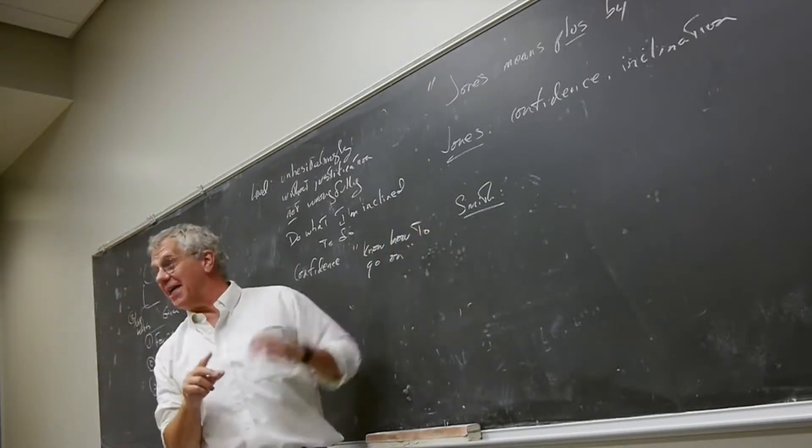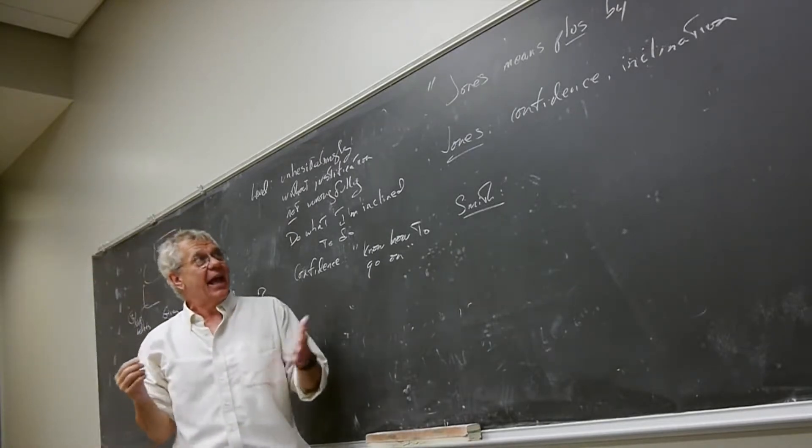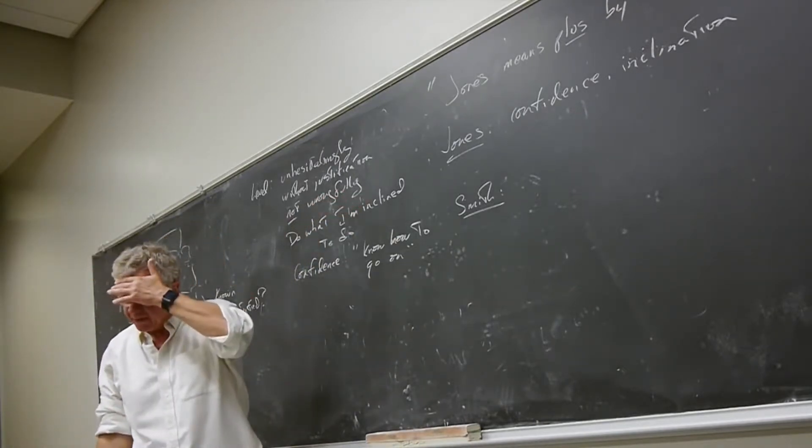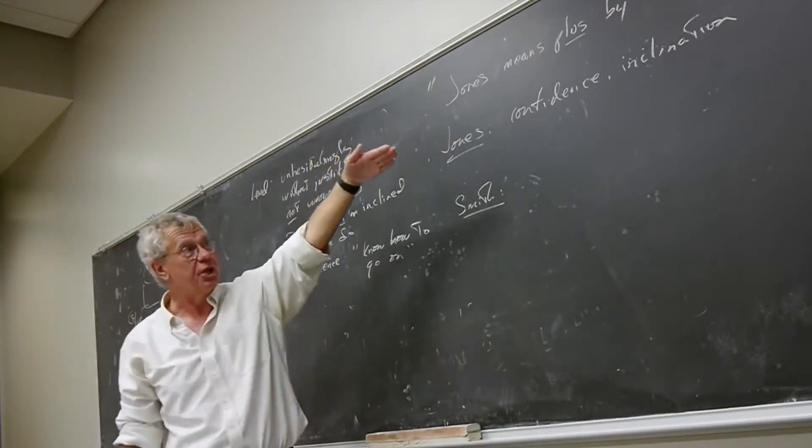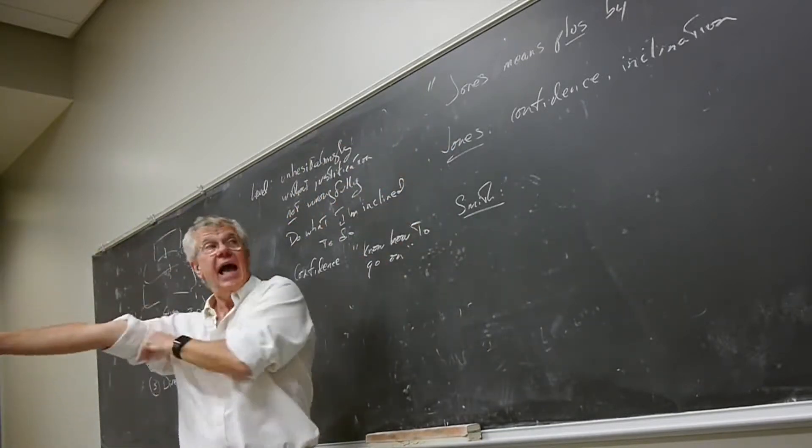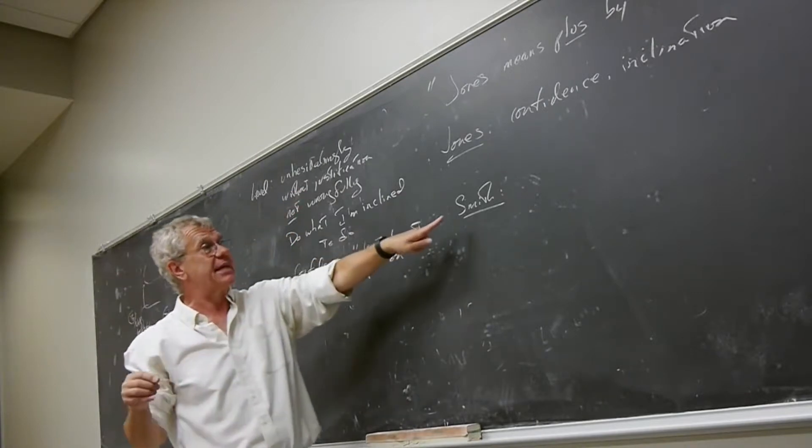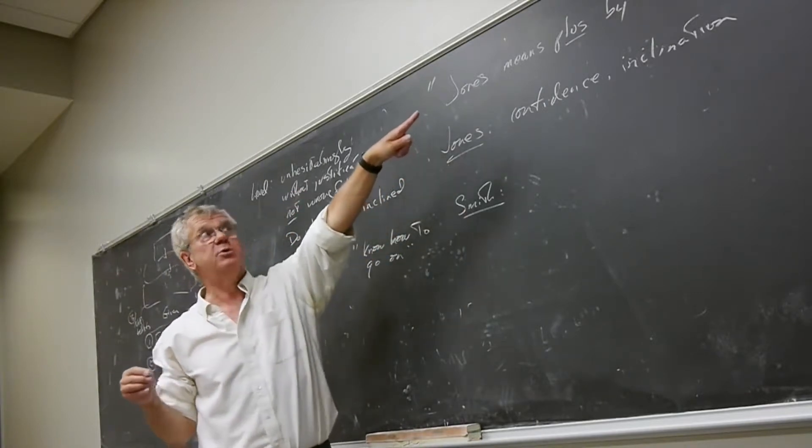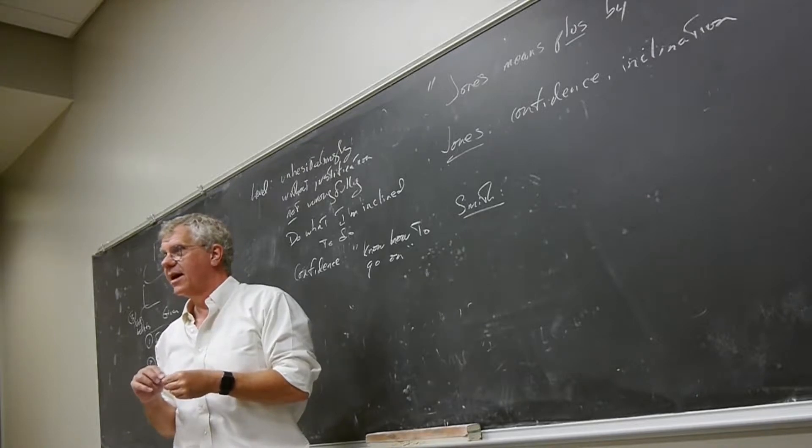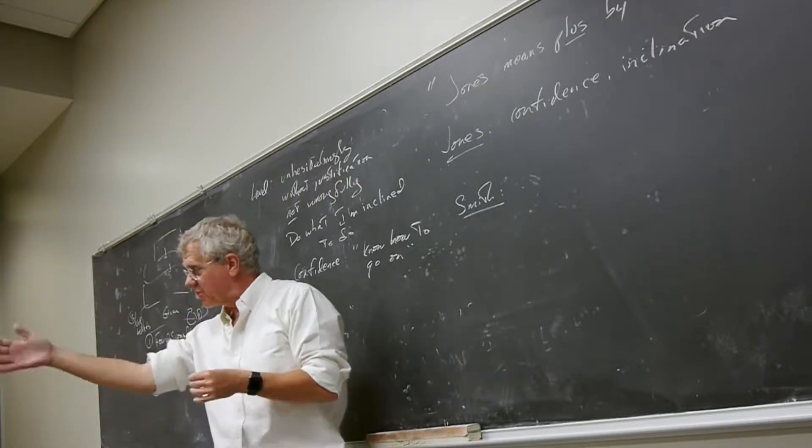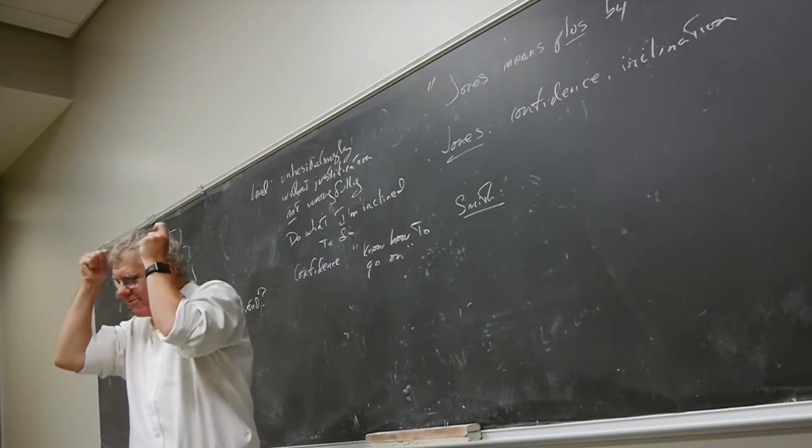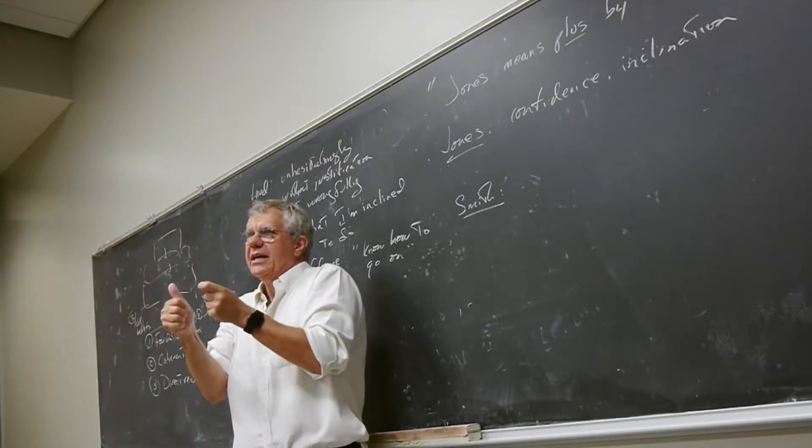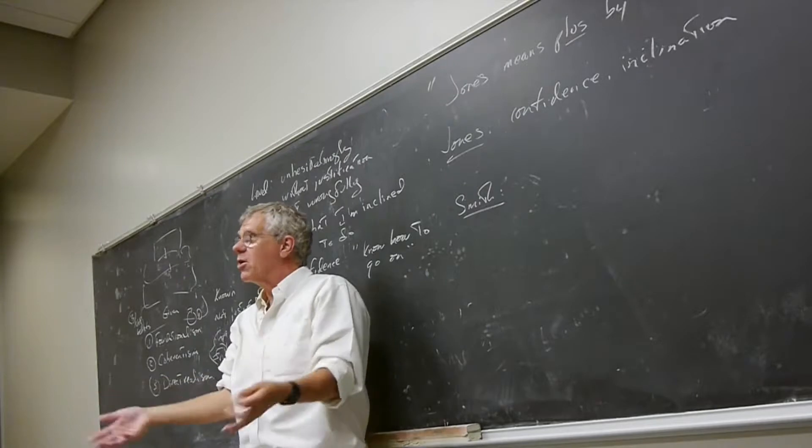Now, that brings us to Smith, okay? But, yeah, you might say, well, gosh, I don't know. In which case, you know, there's not that confident inclination. But now we go to Smith and saying, ah, under what circumstances does Smith say Jones means plus by plus? We've got the child. And when does the child say, yeah, I've got it. I've got the concept of addition. It's when they've got that confidence that they know how to go on.